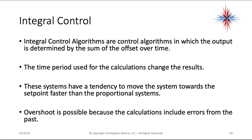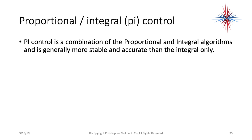Integral control algorithms determine output based on the sum of the offset over time. The time period used for calculations changes the results. These systems tend to move toward the set point faster than proportional systems, but overshoot is possible because calculations include errors from the past. PI control combines proportional and integral algorithms and is generally more stable and accurate than integral alone.